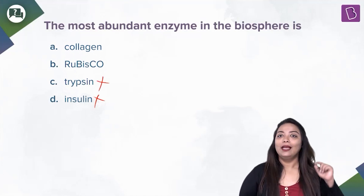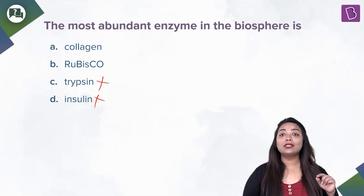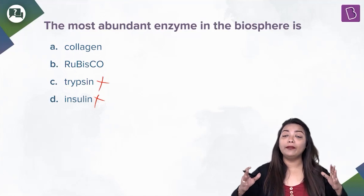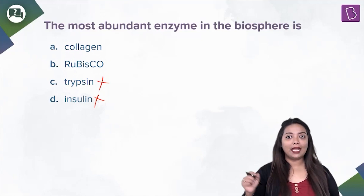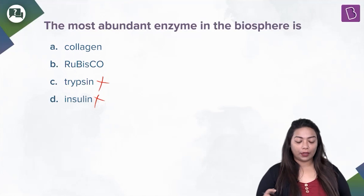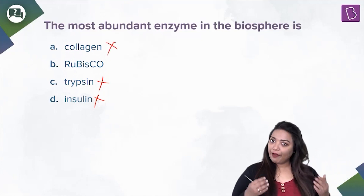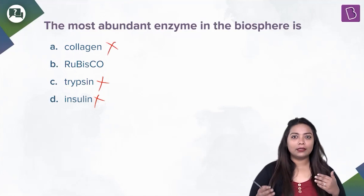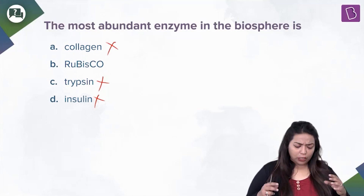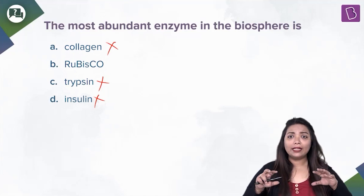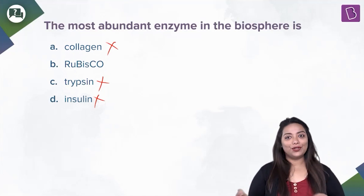Let's go to Option A — Collagen. Collagen is the most abundant protein, not an enzyme, not a hormone. It's the most abundant protein in the body and it's found in the skin, the ligaments, the tendons. It adds strength to those structures.